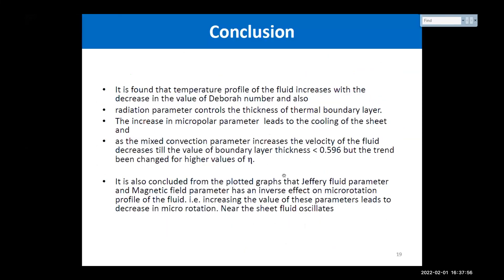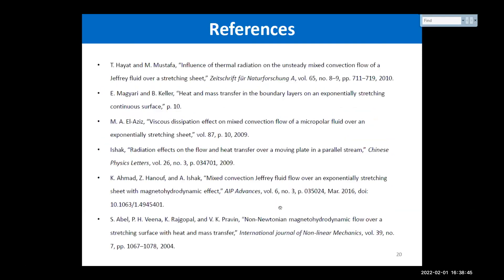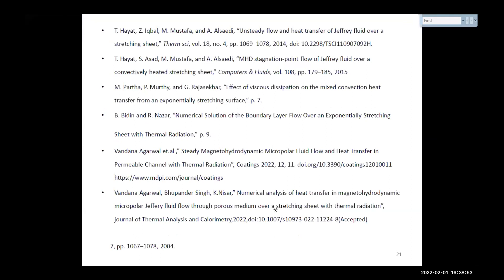Just I'm coming to the conclusion part. It is found that temperature profile of the fluid increases with the decrease in the value of Deborah number, and also the radiation parameter controls the thickness of the thermal boundary layer. It has also been concluded that the increase in the micropolar parameter leads to the cooling of the sheet. It is also concluded from the plotted graphs that Jeffrey fluid parameter and magnetic field parameter have an inverse effect on micro rotation profile of the fluid, and increasing the value of these parameters leads to the decrease in micro rotation. Near the sheet, the fluid shows the oscillating behavior. Some references I mentioned in the end. One paper I mentioned here has been accepted but yet to be published.